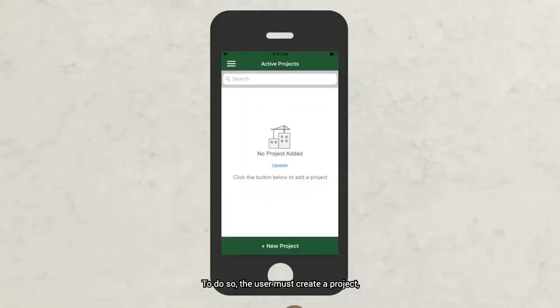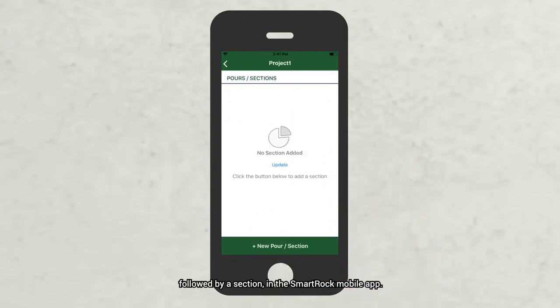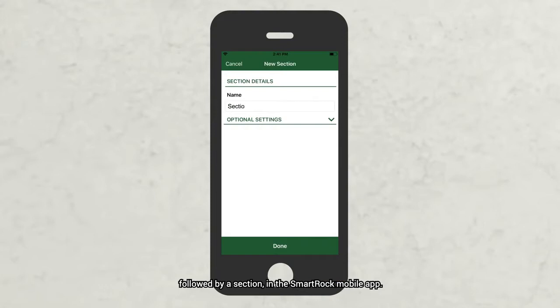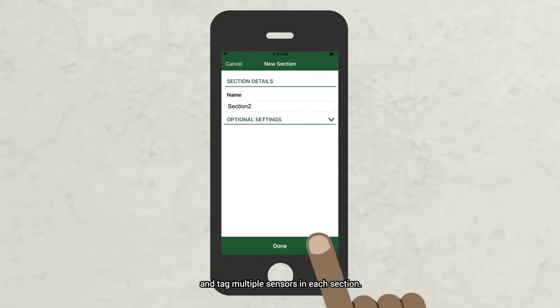To do so, the user must create a project followed by a section in the SmartRock mobile app. The user can create multiple sections within a project and tag multiple sensors in each section.